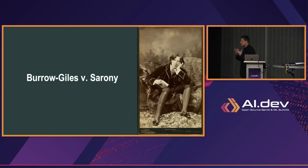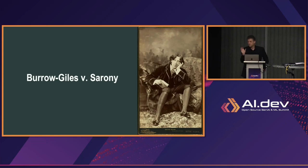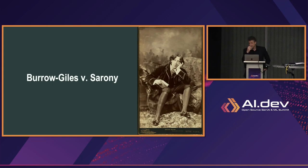This idea that photographs were not art was so entrenched that, while people started to recognize some historical or scientific value, it wasn't until around 1865 that they added the word photographs to the Copyright Act. Still, people didn't think it would be copyrightable until a case around 1873 called Burrow-Giles Lithographic Company v. Sarony — the first Supreme Court case to declare that photographers were authors and that their photos were protectable despite the photographer's mechanized process.